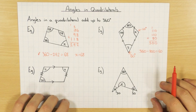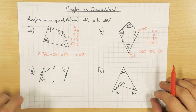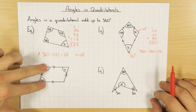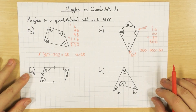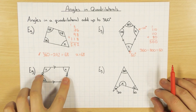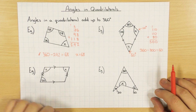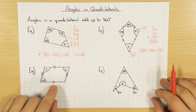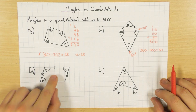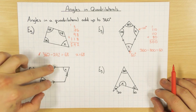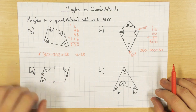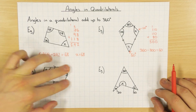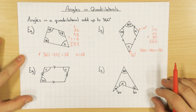Now you might have seen this shape if you've seen my parallel lines video. This is a parallelogram because those two sides are parallel and those two sides are parallel. We can tell it's parallel because of these arrows — one set of arrows and then two sets of arrows. So two parallel lines, two parallel lines: parallelogram.